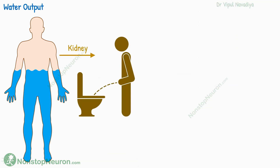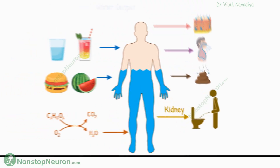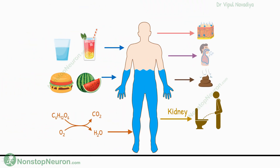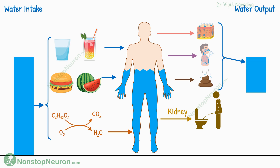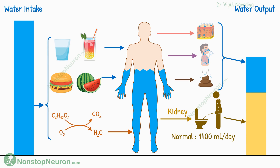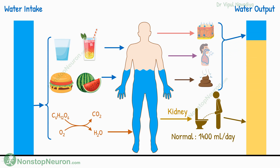Finally, we have the kidneys. The remaining water from the body is removed by the kidneys in the form of urine. The amount lost this way depends on how much is the intake or output by the other routes. If intake and output by other routes are normal, the volume of urine is about 1400 ml per day. But if the intake is more or loss by other routes is less, the urine volume increases.